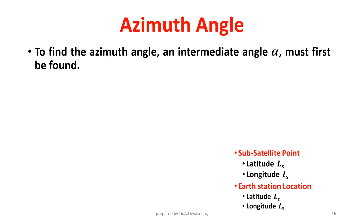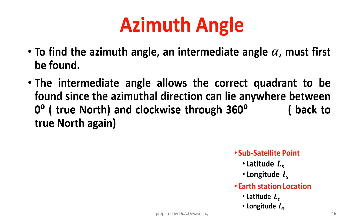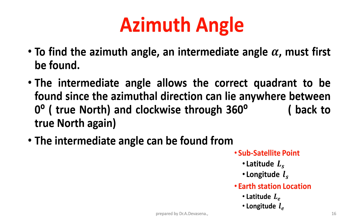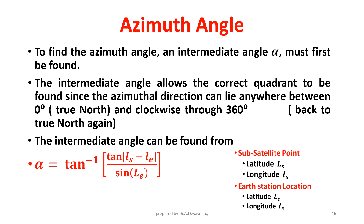Azimuth angle: to find the azimuth angle, an intermediate angle alpha must first be found. The intermediate angle allows the correct quadrant to be determined, since the azimuth direction can lie anywhere between 0° (true north) and clockwise through 360° back to true north again. The intermediate angle is found from: α = tan⁻¹(tan|l_s − l_E| / sin(L_E)).